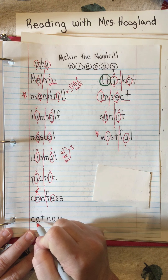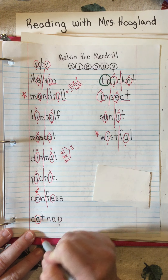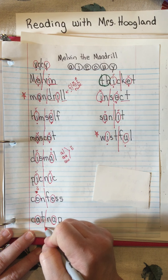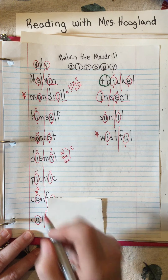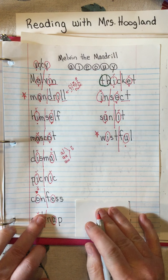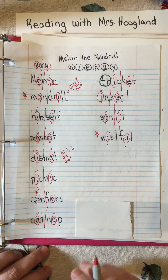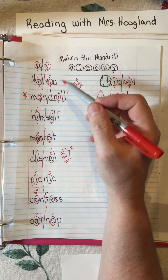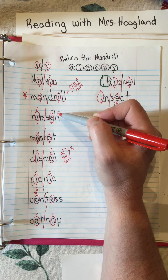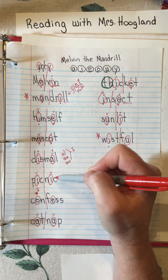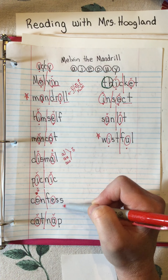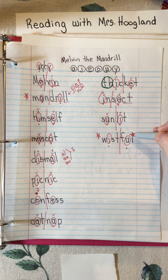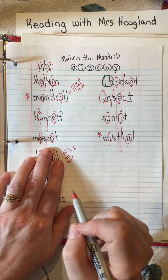The last word: we have a vowel, a vowel, and two consonants in the middle - split it. We get 'cat' and 'nap' - catnap! A quick little nap. So we have all our words: Melvin, mandrel, himself, mascot, dismal, picnic, confess, catnap, thicket, insect, sunlit, and wistful.